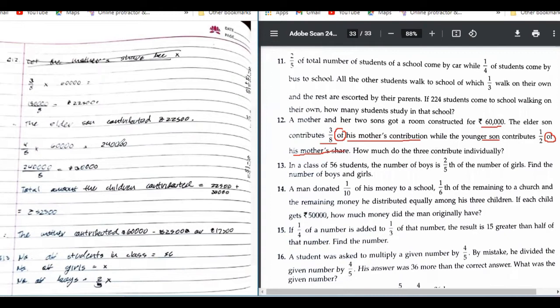Okay. So, this part, the elder son contributed 3/8. What have you done? 3/8 of 60,000. This part is wrong. Okay.